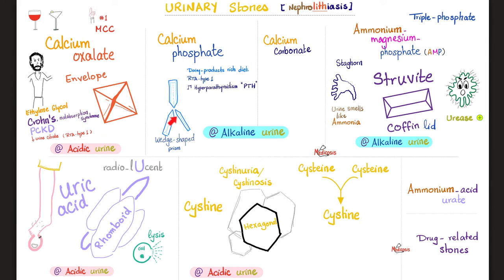Calcium phosphate — shaped like wedge-shaped prisms, precipitate in alkaline urine. Risk factors include dairy-product-rich diet because of high phosphate content — that's why nephrologists tell kidney failure patients not to drink milk, ice cream, or yogurt, because they cannot excrete phosphate and will develop hyperphosphatemia. Type 1 distal RTA can also lead to calcium phosphate stones. Primary hyperparathyroidism — too much PTH — is a phosphate-trashing hormone that excretes phosphate into the urine, increasing the risk of calcium phosphate stones.